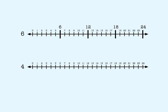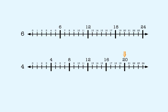Now let's look at the multiples of 4. 4 times 1 is 4. 4 times 2 is 8. 4 times 3 is 12. 4 times 4 is 16. 4 times 5 is 20. 4 times 6 is 24. Notice that there are two places where the multiples of 4 and 6 are the same. The first one is here, at 12.